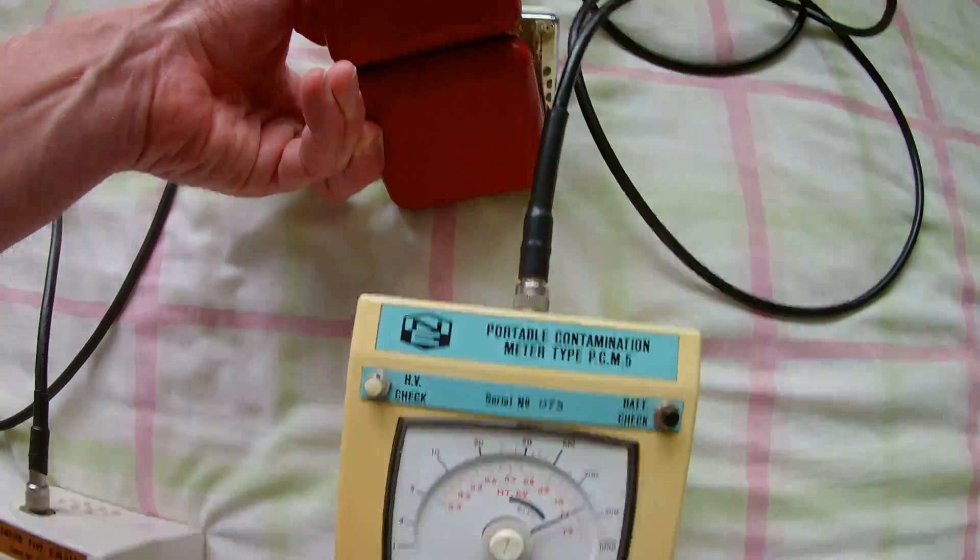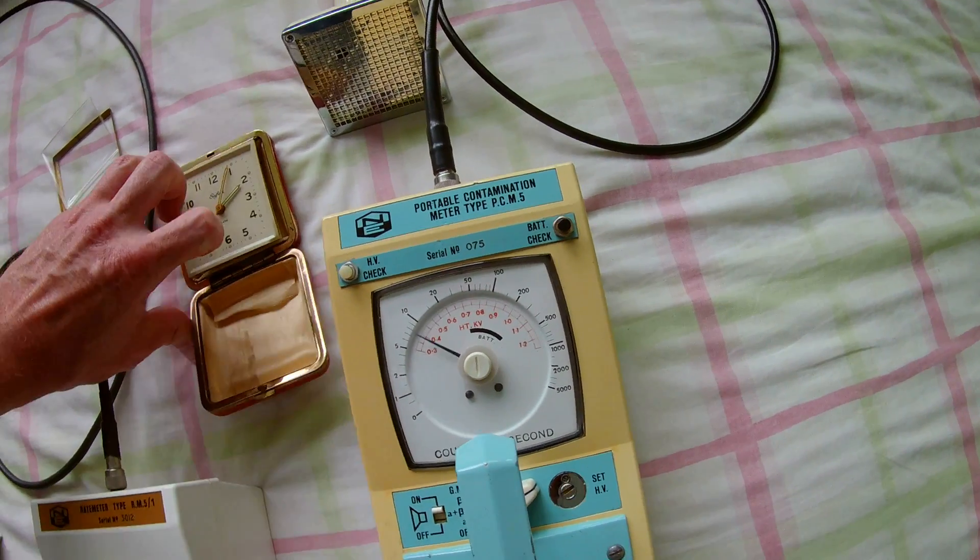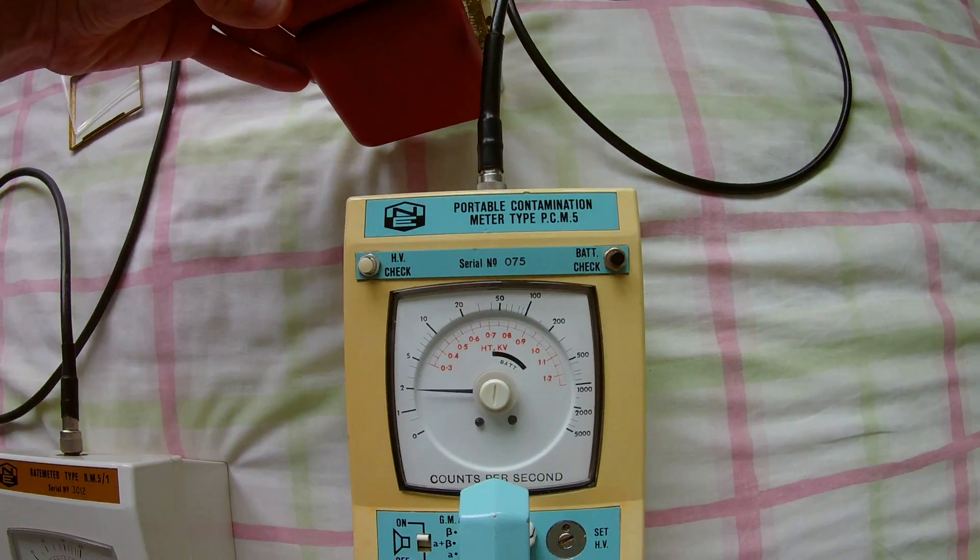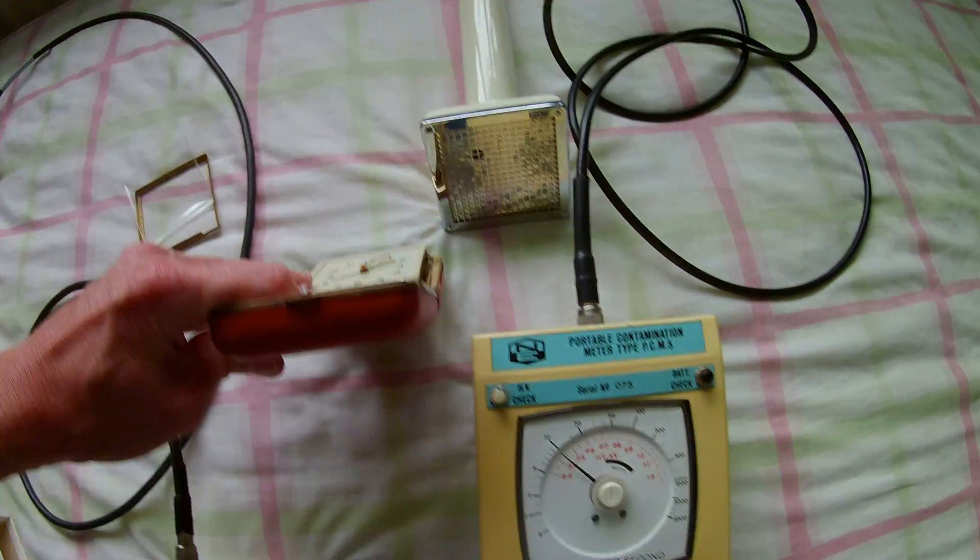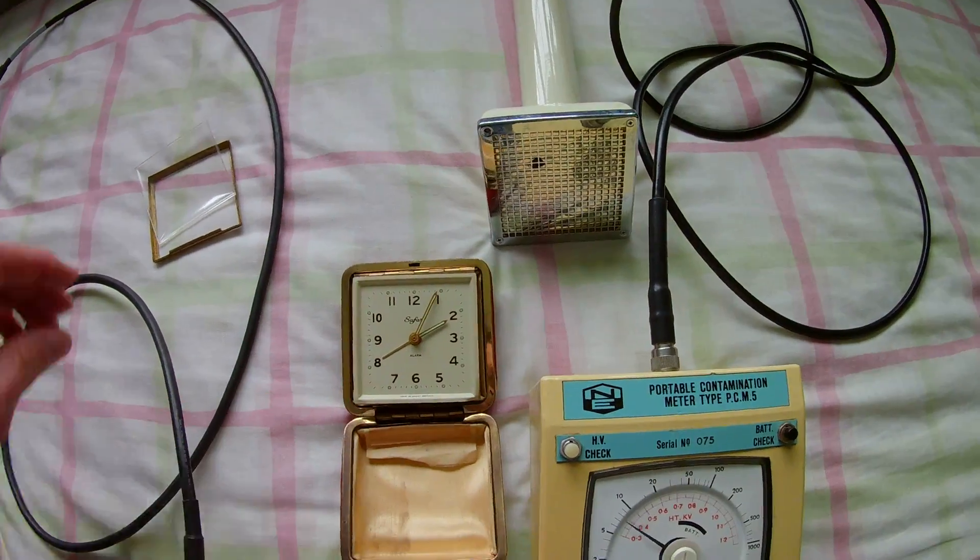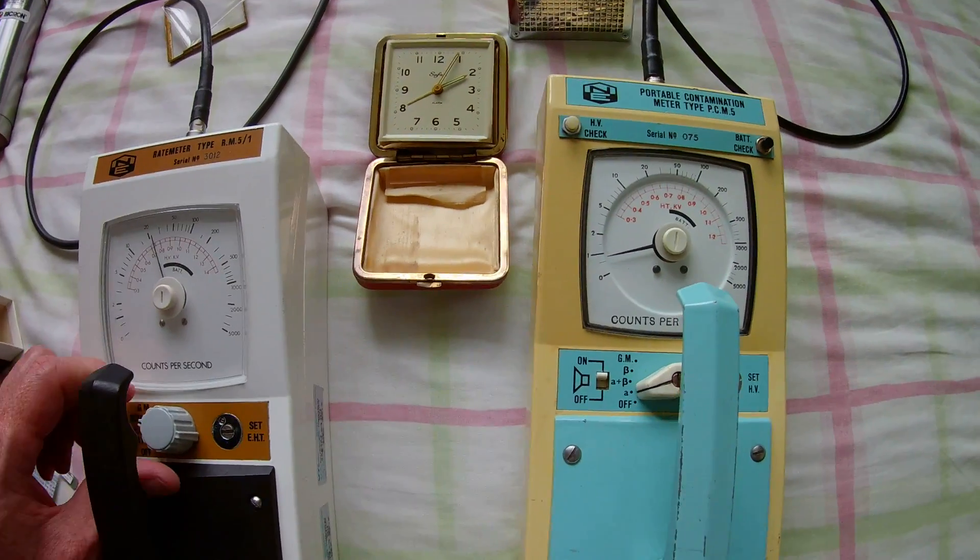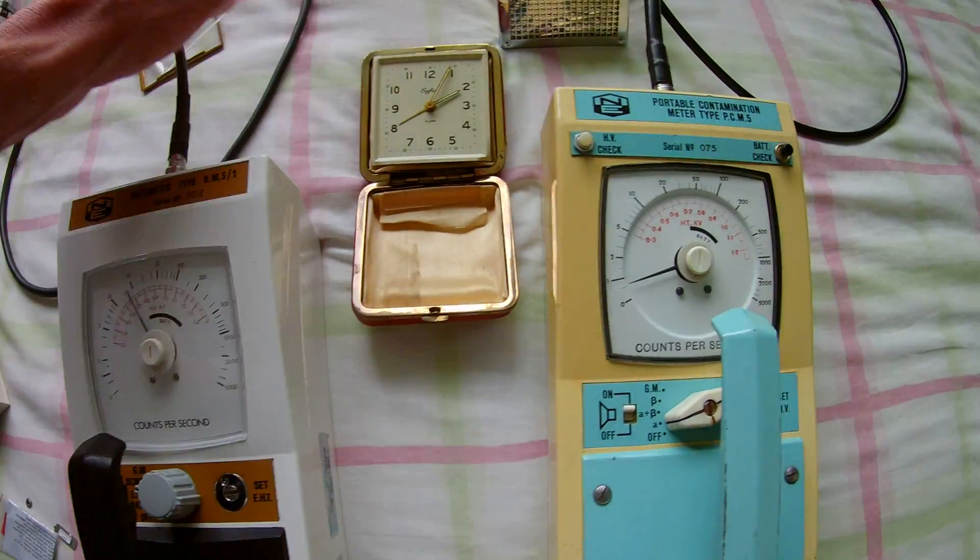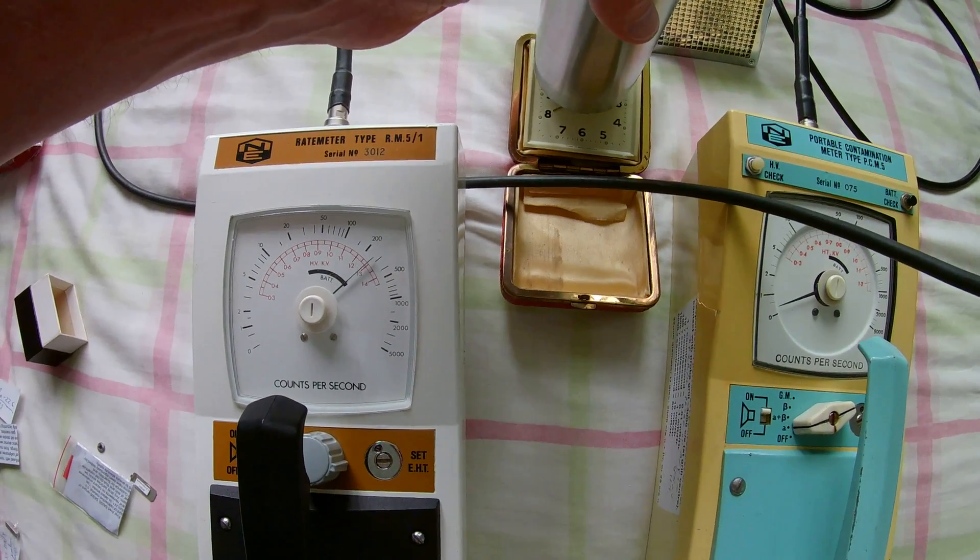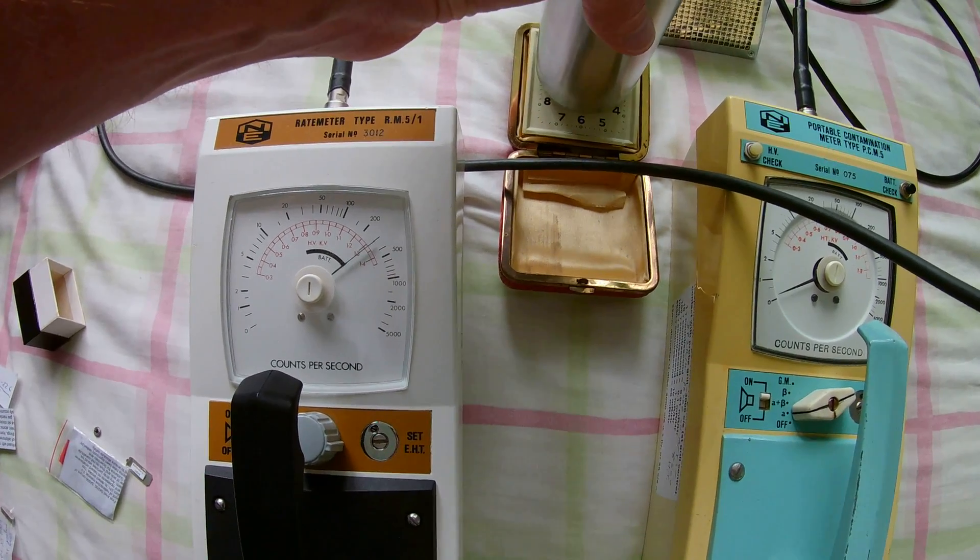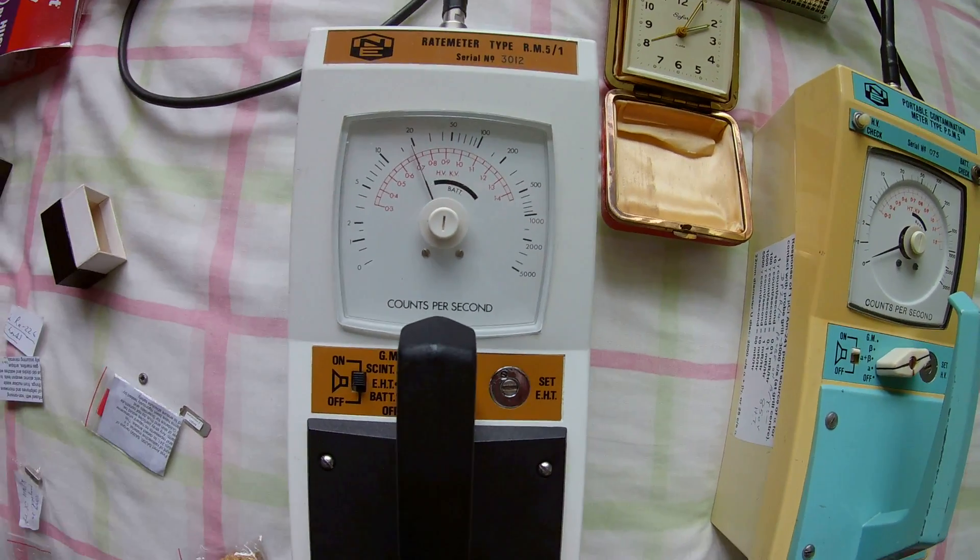Some alpha as well is coming out. Let's put it on alpha only and see what the reading is. There's quite a lot of alpha coming off the hands, but not going through the plastic, only if the hands are exposed with the plastic shield removed. On the other instruments, we put the loudspeaker on and the rate meter.